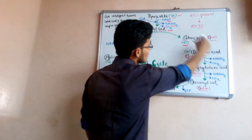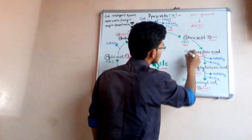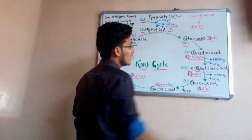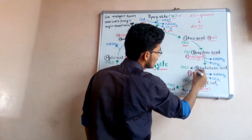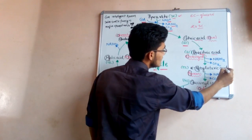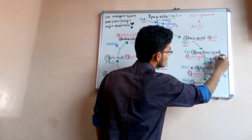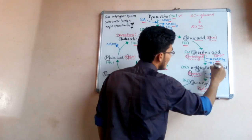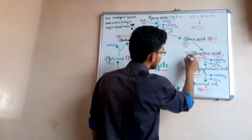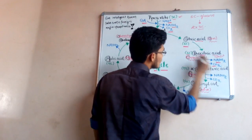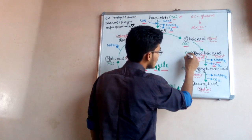Citric acid is converted into isocitric acid, which is also a six-carbon compound. After that, isocitric acid gets converted into ketoglutaric acid by utilizing NAD positive and releasing one molecule of CO2. Since one carbon is lost, the six-carbon compound is converted into a five-carbon compound, that is ketoglutaric acid.